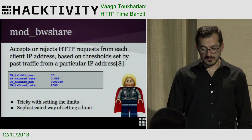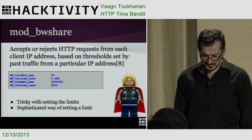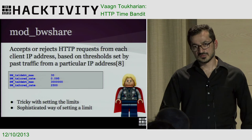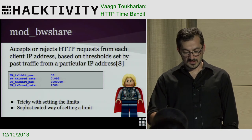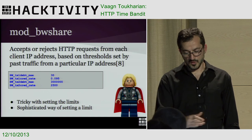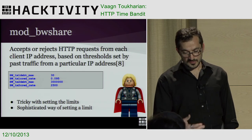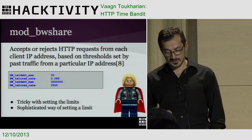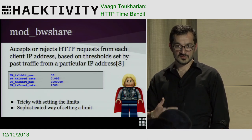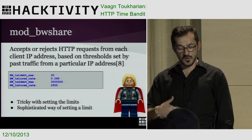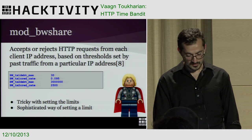A more advanced module was the bandwidth share module. Rather than filtering per connection or per source, it has thresholds that let traffic exceed limits a bit, using a concept of credit and debt. A pool of IPs can go into debt up to some level — that being the number of requests it makes — and if it overflows its debt, it gets cut off.